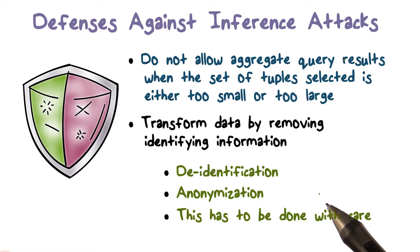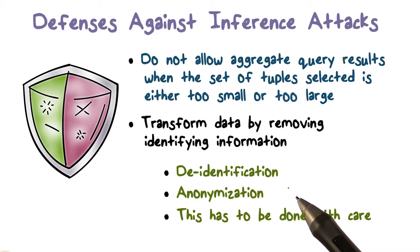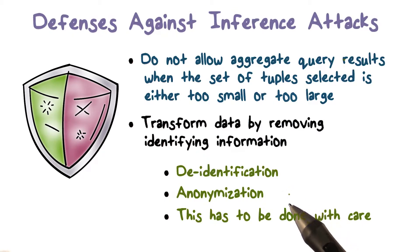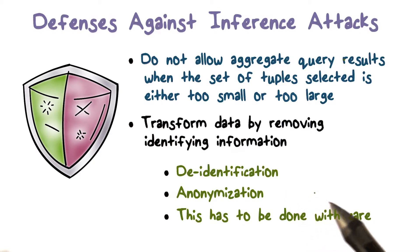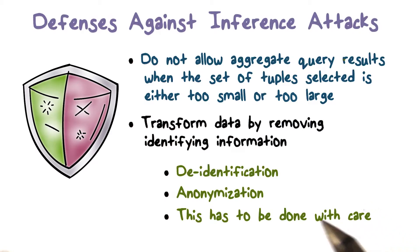Dropping the last two digits is one way to generalize. For example, Georgia Tech's zip code is 30332. If we replace the last two digits with 00, then the three digits we have match with a much larger area. But what if even after that generalization, the disease values across all those different zip codes sharing the same first three digits are not diverse enough — if they're exactly the same?